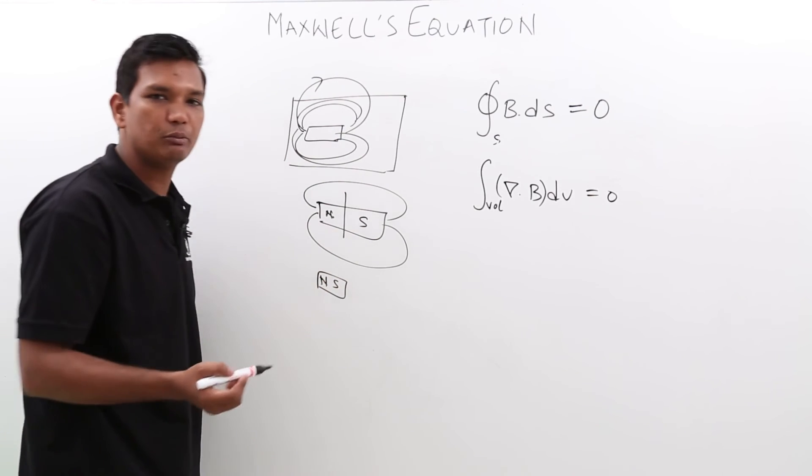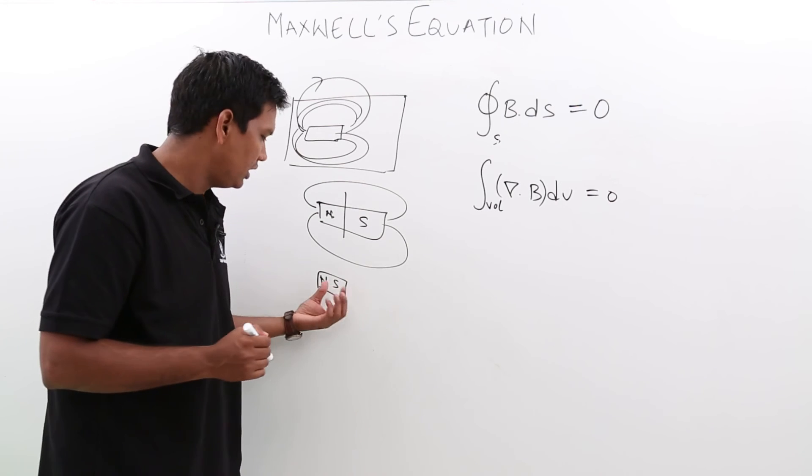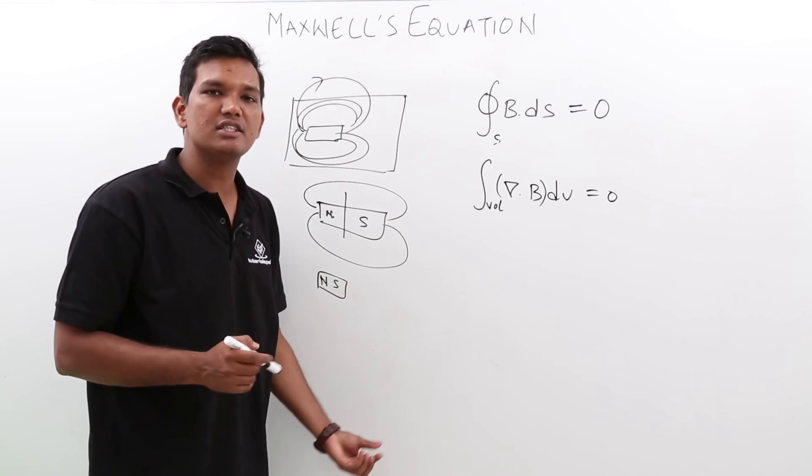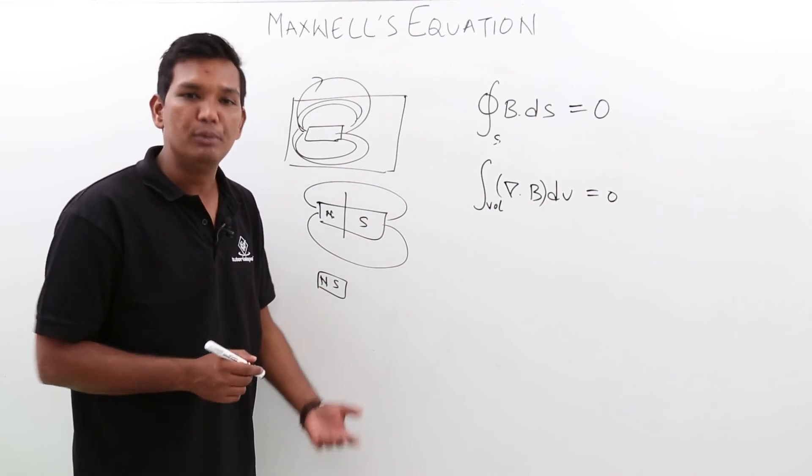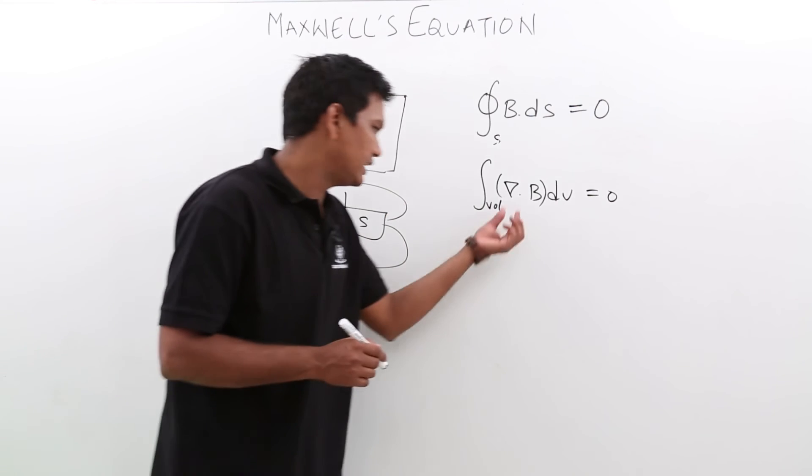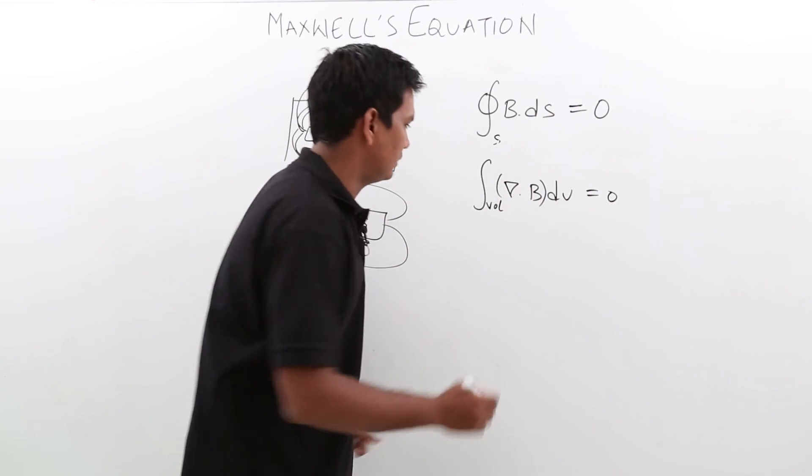You cannot create a monopole. As you cannot create a monopole, in that case, your divergence in case of magnetic field will be always 0. So we say that ∇·B will be 0.